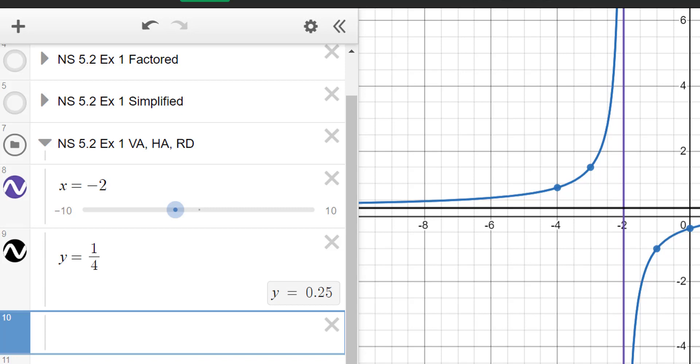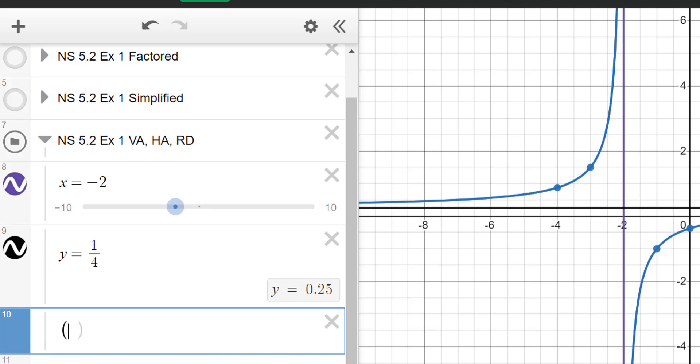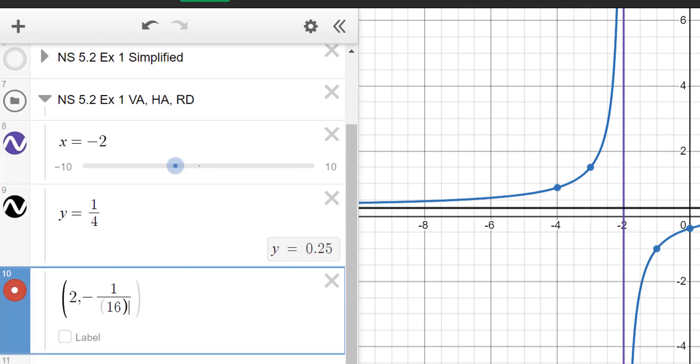And then we had a hole. We had a removable discontinuity at the coordinates. So you're going to type the coordinates in parentheses, two, comma, negative one-sixteenth. So you're going to put all of those pieces in. And once you have those in, you can kind of see them show up on a graph a little bit. But we've got to do some other things here first.